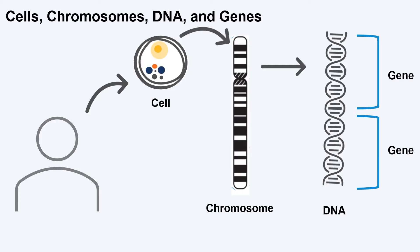Each of us have millions and millions of cells that make up our bodies. We have different types of cells such as skin cells, brain cells, and heart cells that act as our body's building blocks. Our cells contain structures called chromosomes, which hold our genetic information, or our DNA, and keep all our genetic information packaged into our cells. Our DNA is our body's instruction manual telling our bodies how to develop and function.